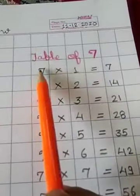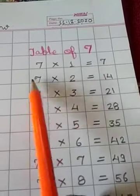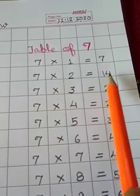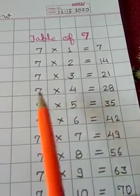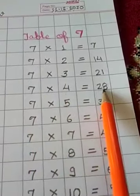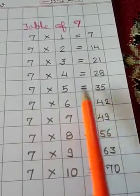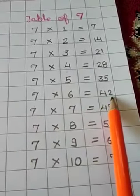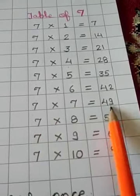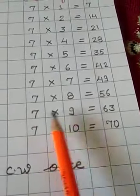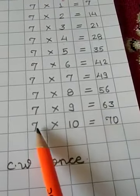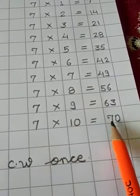So, start writing 7, 1's are 7. 7, 2's are 14. 7, 3's are 21. 7, 4's are 28. 7, 5's are 35. 7, 6's are 42. 7, 7's are 49. 7, 8's are 56. 7, 9's are 63. And 7, 10's are 70.